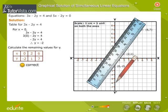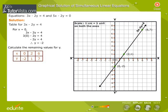This is the line for the equation 3x minus 2y is equal to 4.